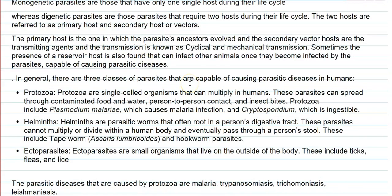The primary host is the one in which the parasite's ancestral species have evolved. The secondary or vector hosts are those that are mainly acting as transmitting agents. The transmission could be cyclical or mechanical. Sometimes, apart from the primary and secondary hosts, the presence of reservoir hosts is also found associated with parasitic diseases.